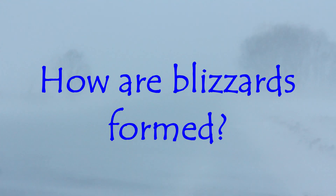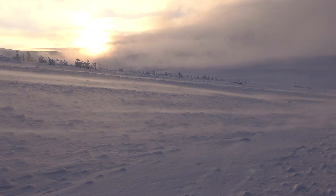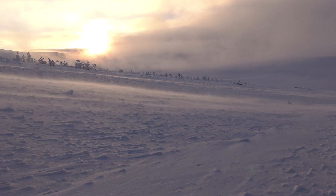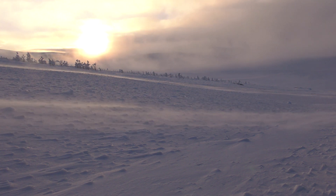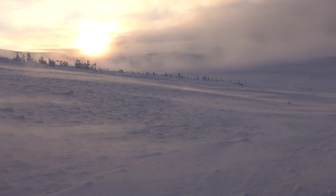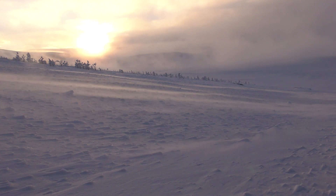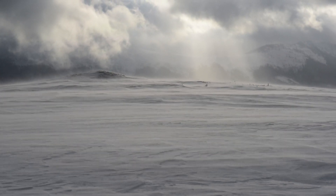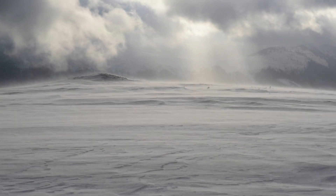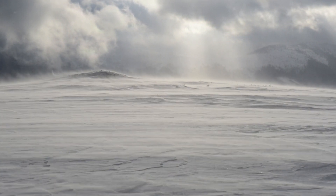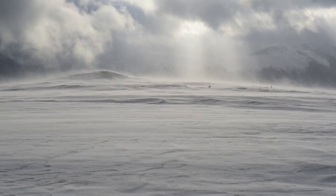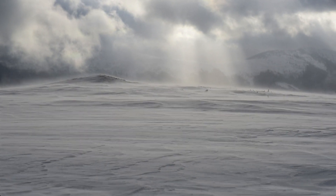How are blizzards formed? For a blizzard to form, there have to be key elements. The air in the clouds must be below the freezing point to allow for the formation of snowflakes. The air on the ground must also be below the freezing point. Moisture in the air, known as water vapor, is also important. When wind blows across large bodies of water, it picks up a lot of water vapor, which contributes to the formation of a blizzard.